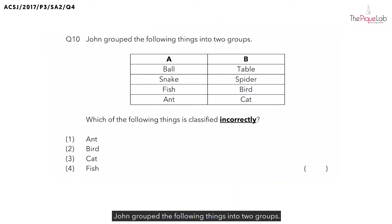Question 10. John grouped the following things into two groups. From the table below, you can see that in group A, there is the ball, snake, fish, and ant, while in group B, there's the table, spider, bird, and cat. And the question is asking you which of the following things is classified incorrectly.